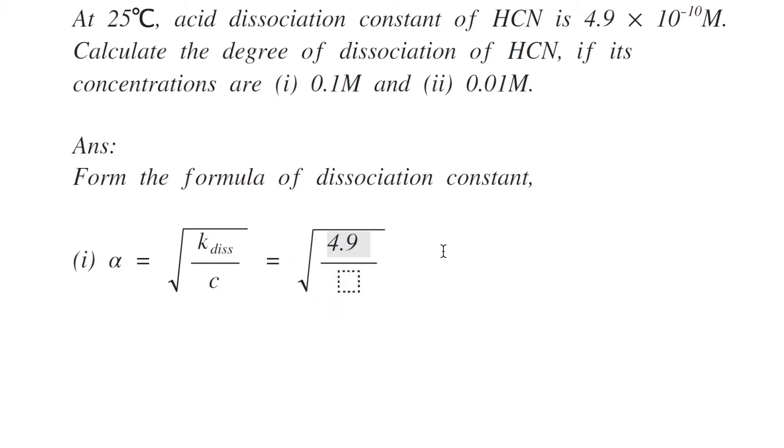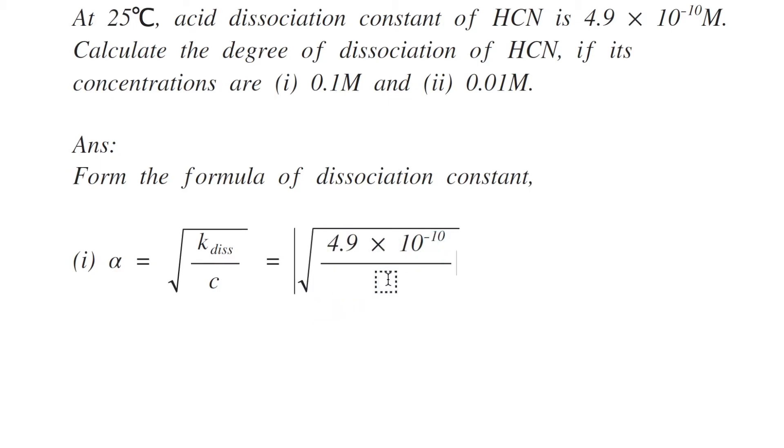So let's substitute the values for the first one, that is 4.9 into 10 to the power minus 10 divided by 0.1. On simplification, it gives the value of 7 into 10 to the power minus 5 moles.